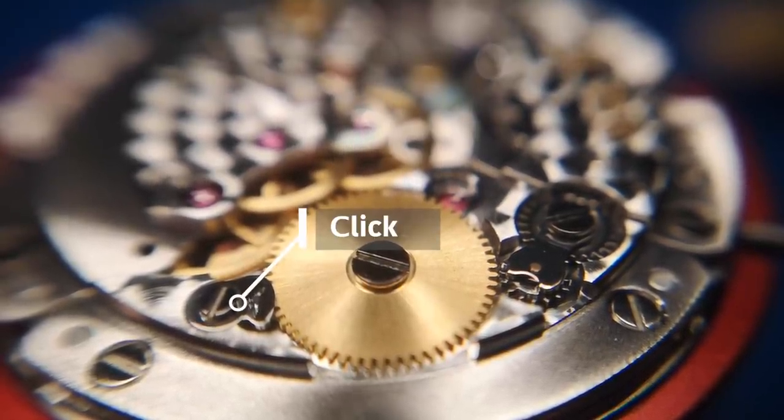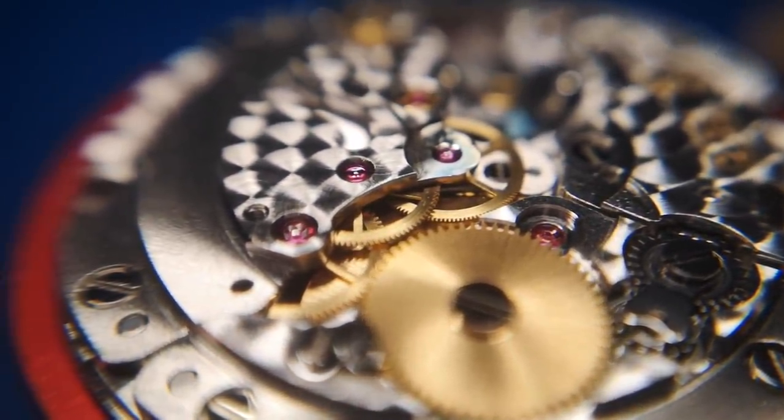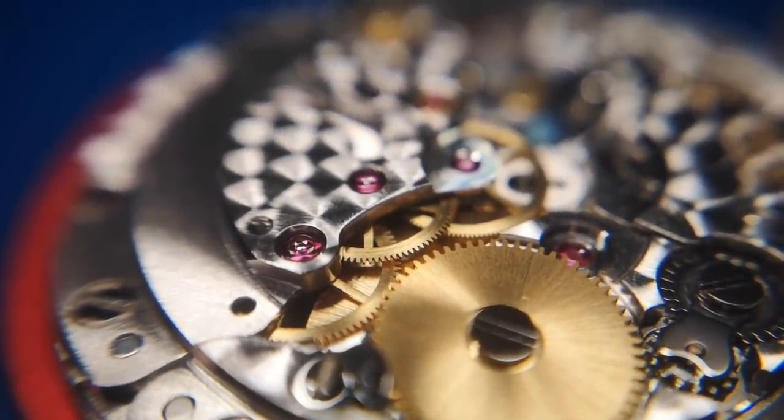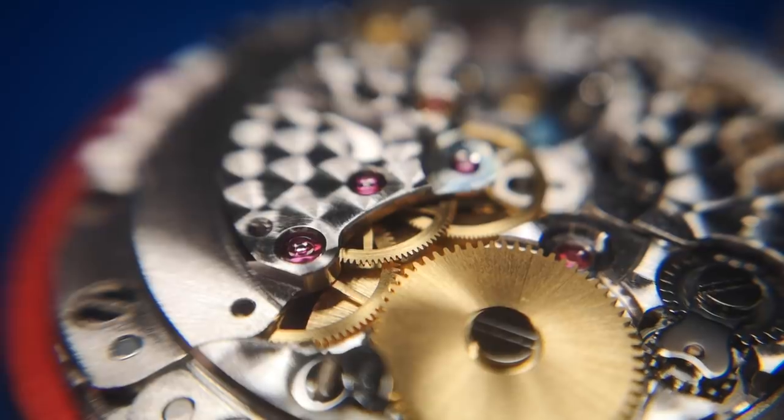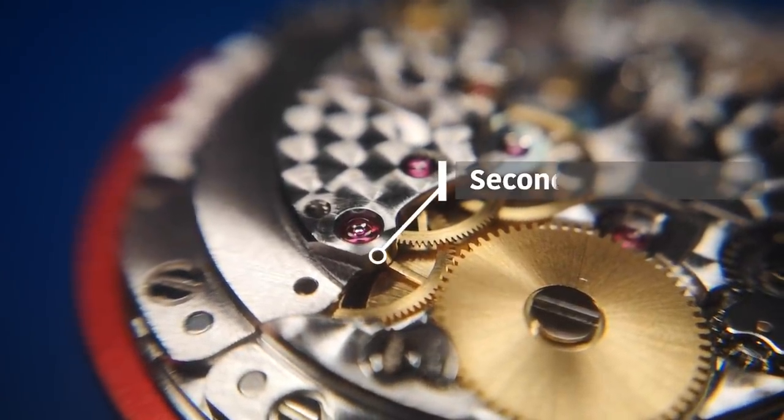As the ratchet wheel turns, it has the effect of putting power on the spring. Now that power is then transmitted to the three wheels that you can see there in the powertrain, and you've got the second wheel there in the middle of the frame.